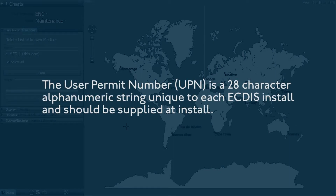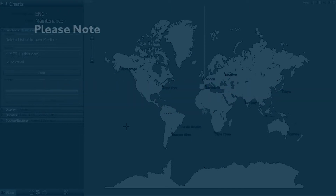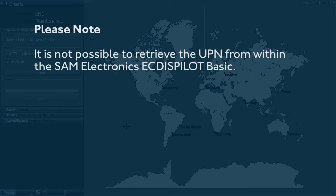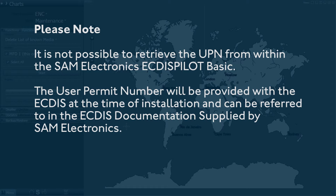The User Permit Number (UPN) is a 28-character alphanumeric string unique to each ECTIS install and should be supplied at install. Please note, it is not possible to retrieve the UPN from within the SAM Electronics ECTIS Pilot Basic. The User Permit Number will be provided with the ECTIS at the time of installation and can be referred to in the ECTIS documentation supplied by SAM Electronics.